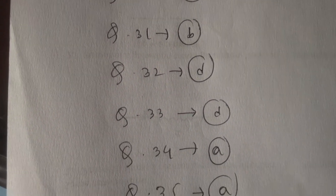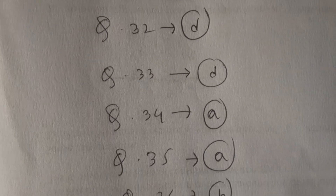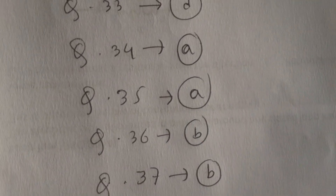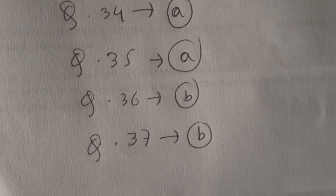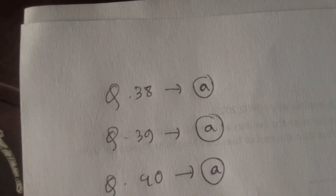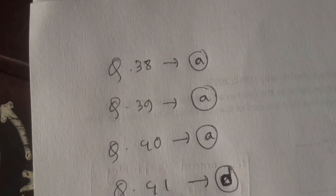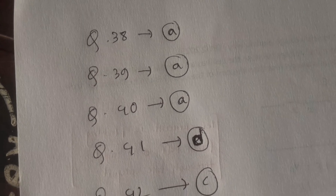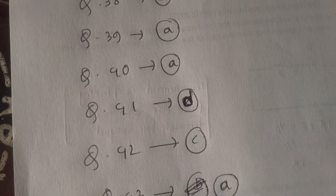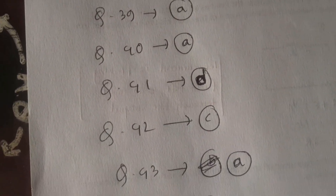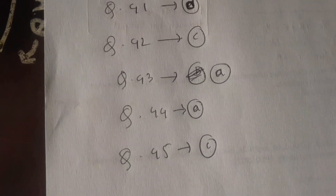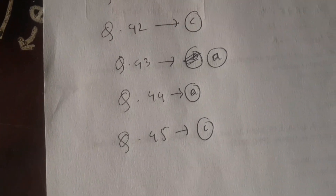Question number 31 is B. Question number 32 is D. Question number 33 is A. Question number 35 is A. Question number 36 is B. Question number 37 is B. Question number 38 is A. Question number 39 is A. Question number 40 is A. Question number 41 is D. Question number 42 is C. Question number 43 is A. Question number 44 is A. Question number 45 is C.